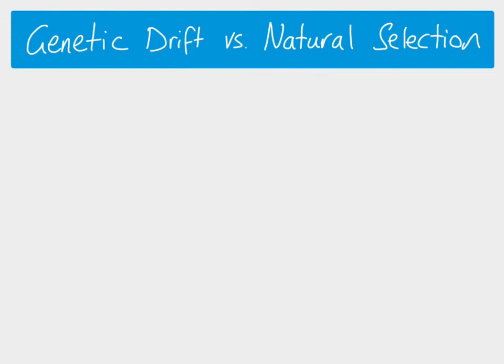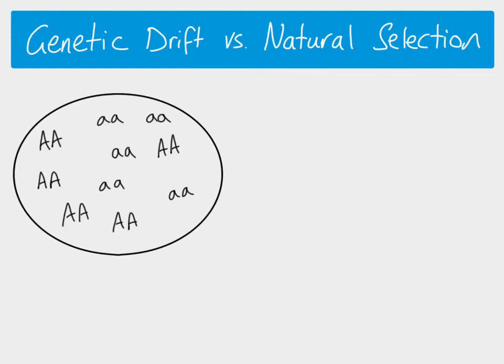Both genetic drift and natural selection are ways in which the allele frequencies in a population can change. Starting with natural selection: here is our gene pool. Let's say these are insects and we're looking at the gene for the color of the insects. To keep it simple, I'm only looking at homozygous individuals — homozygous dominant individuals with a frequency of 0.5, and also alleles for the recessive allele Q, which is also 0.5, so there's 50% of each allele in our population.